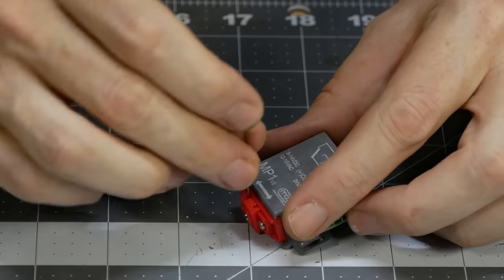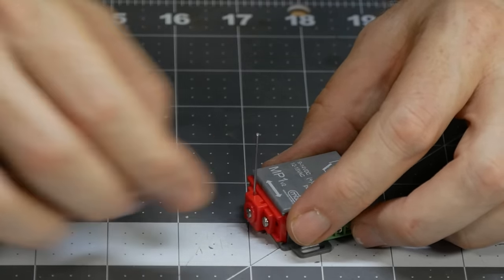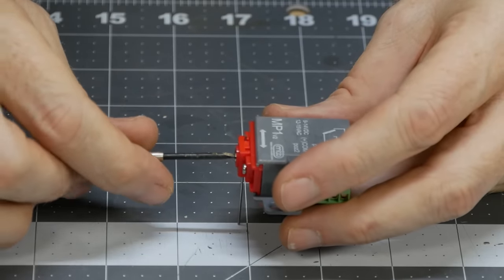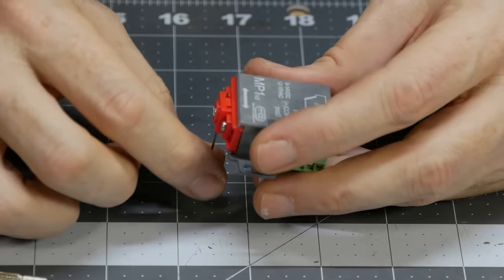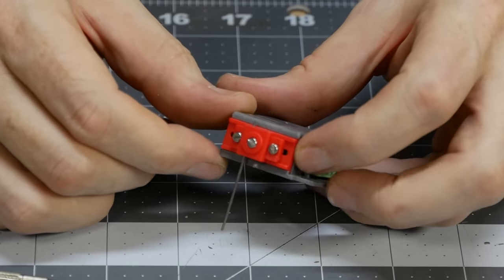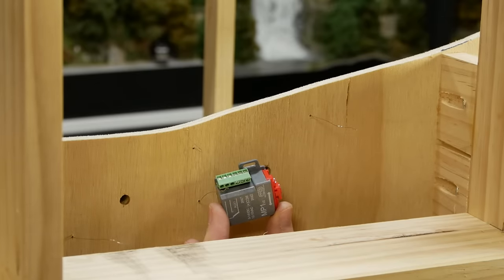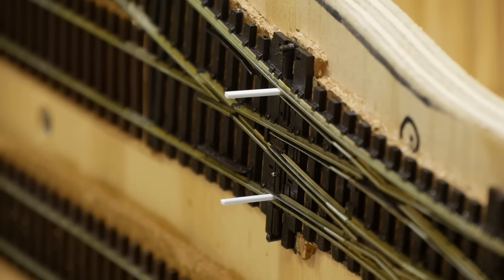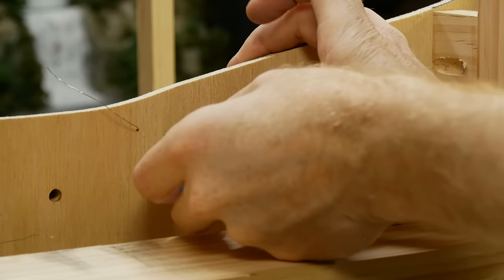The throw bar is installed and tightened in place. There is so much flexibility with these switch motors they are really easy to adjust. Now it's just a matter of placing the switch motor in position making sure that you get the throw bar through the correct hole. Once happy its position is marked.